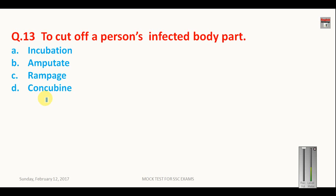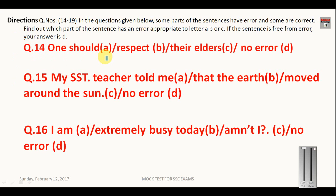To cut off a person's infectious body part is called amputate. Rampage is kind of riot. Concubine is immoral woman. And incubation is also a process in biology where animals provide suitable temperature for hatching.